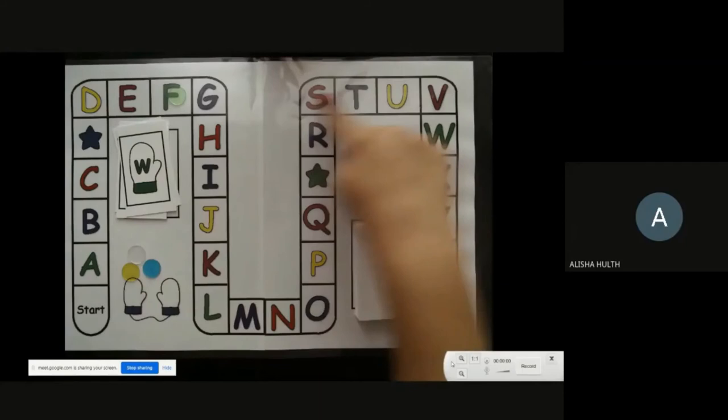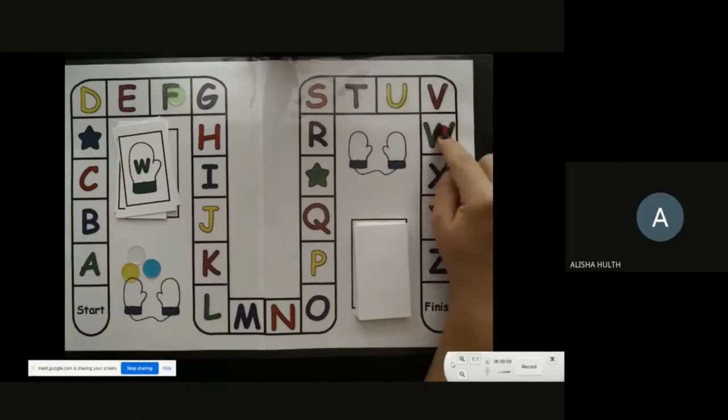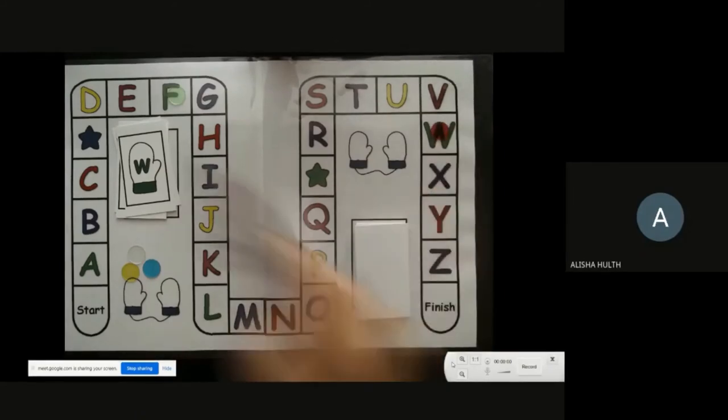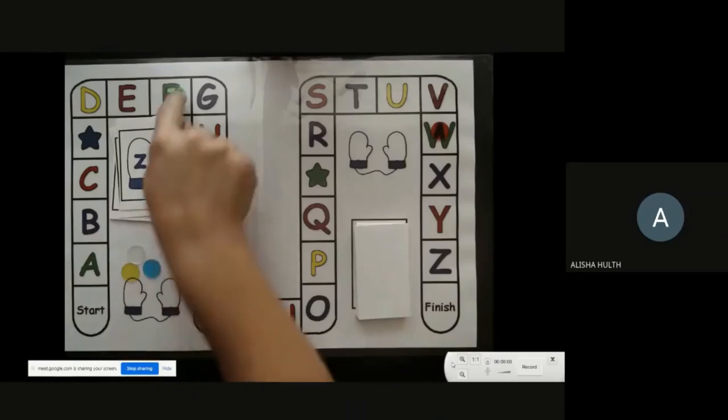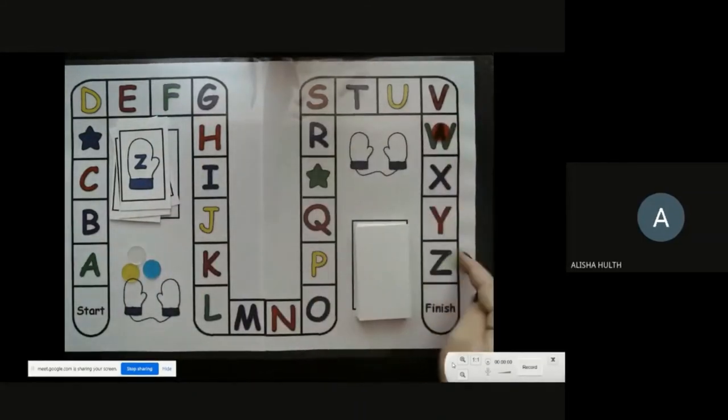Letter W. Letter is W. The sound is W, like Wednesday. Okay, winner winner. Letter Z. Letter Z says Z, like zebra.